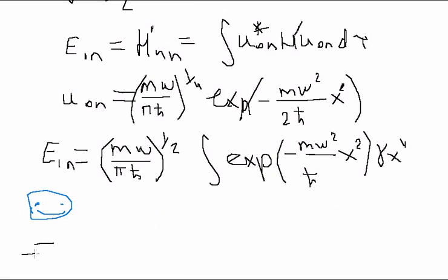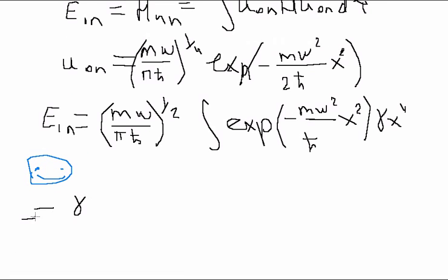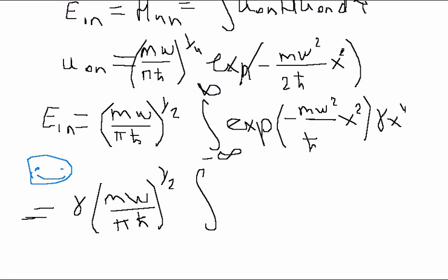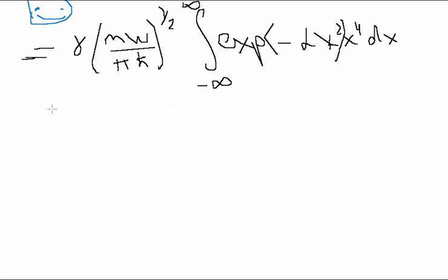I have written the first energy approximation and let's try to find this integral. The method of finding such integrals is common enough, and our main task is to calculate this integral: the exponent minus alpha x squared times x to the fourth power dx.